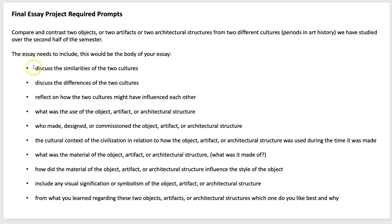In the body of your essay, you'll respond to these various prompts. Discuss the similarities of the two cultures and their differences. Reflect on how the two cultures might have influenced each other — for example, if you chose Byzantine and Islamic, how did those two cultures influence each other? Also address the use of the object, artifact, or architectural structure, and who made or designed it, and why it was commissioned, along with the cultural context in relationship to how the object was used.